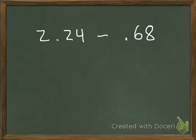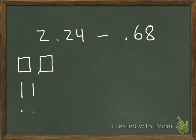Let's look at one last example: 2 and 24 hundredths minus 68 hundredths. I'm going to represent 2 and 24 hundredths with 2 wholes, 2 tenths, and 4 hundredths. I need to subtract 68 hundredths from this. Starting with my smallest place — the hundredths — I'm going to subtract 8 hundredths from the 4 hundredths I have. But there's a problem: I only have 4 hundredths and can't take away 8.